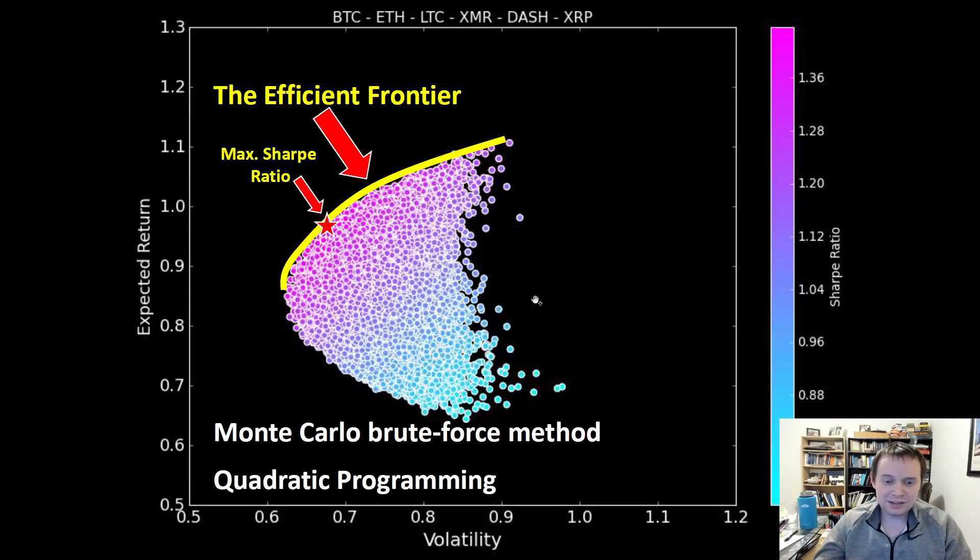The Sharpe ratio is essentially just your returns minus the risk-free returns divided by the standard deviation of the excess returns. You can solve for this by doing a Monte Carlo brute force method like running a million simulations—this one's 250,000—you can also use a little bit of quadratic programming.